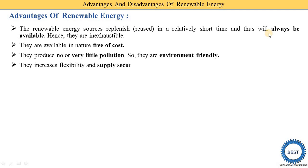The next advantage is they increase flexibility and supply security because they can be produced locally. In a thermal power plant or nuclear power plant, we are not able to install them in our homes. Nowadays, you see that solar panels are installed at every home. They are flexible systems and give supply security because we produce it locally. We can install renewable energy or solar power plants at our homes, so we can produce locally.